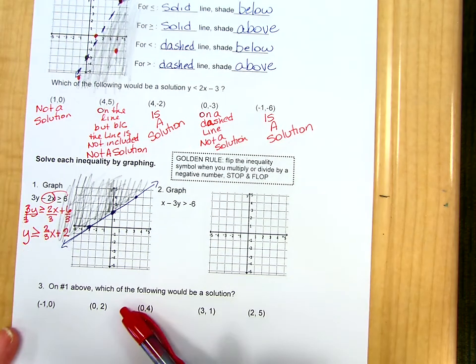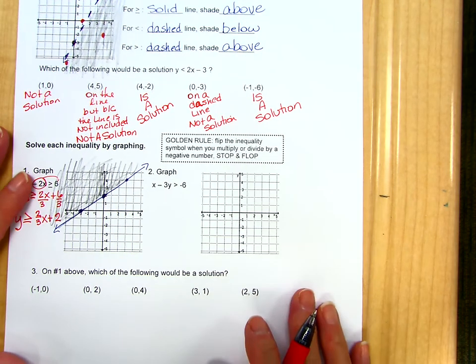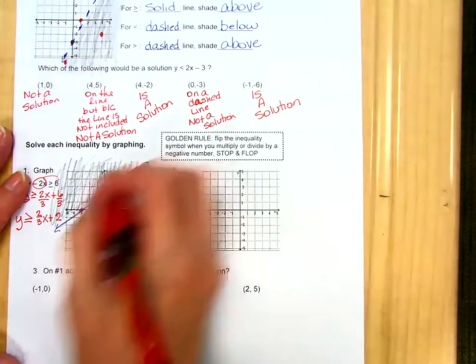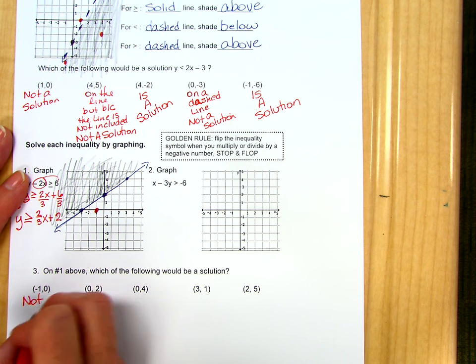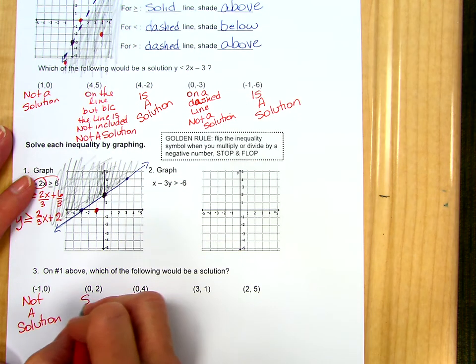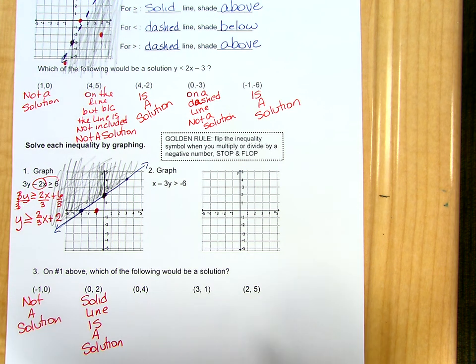So here it asks for number 3 and number 1 above, which of the following would be a solution. So negative 1, 0 is not in the shaded area, so this is not a solution. 0, 2 is on the line. It's a solid line, so it is a solution because a solid line is included in your solution set.